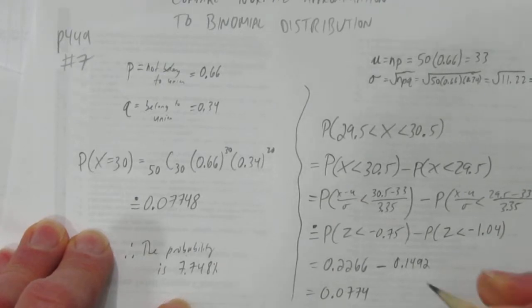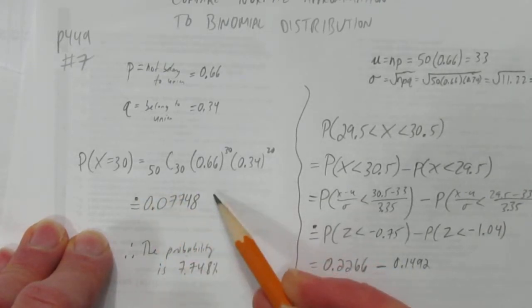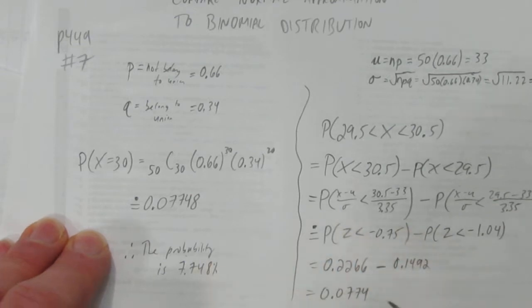And so what we did there was, we did looking at the binomial distribution, and then looking at the normal approximation, and compared the two, and saw there was a high degree of accuracy.